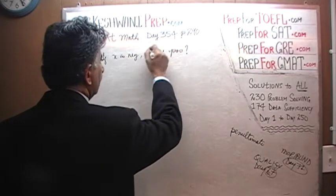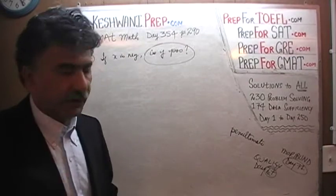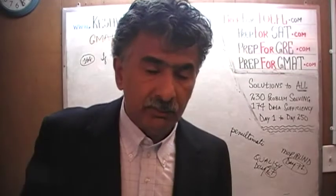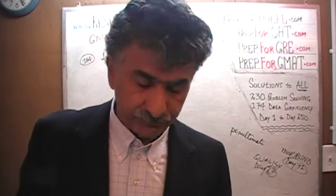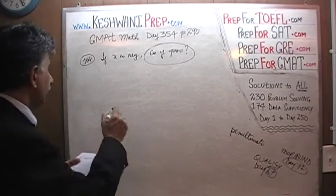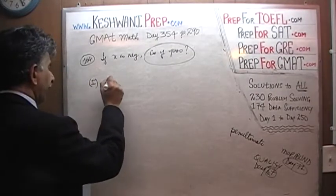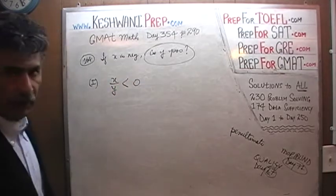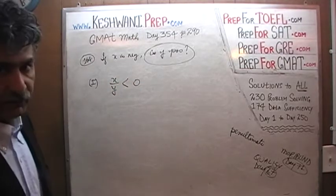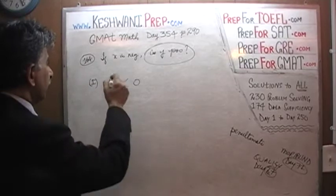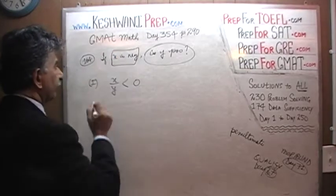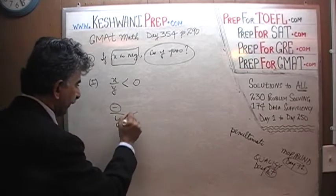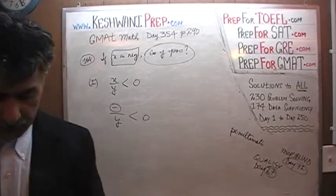Problem number 164 tells us that if x is negative, is y positive? Pretty straightforward simple question. If x is negative, are we able to tell whether y is positive? Let's find out. In the first statement, they tell us that x over y is negative — x divided by y is negative. But we know that x is negative, which means a negative quantity divided by y is negative.